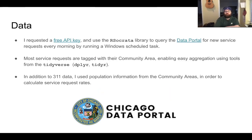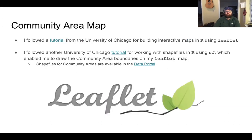In addition to 3-1-1 data, I used population information from the community areas in order to calculate service request rates. To make my community area map, I followed a tutorial from the University of Chicago for building interactive maps in R using Leaflet. I followed another University of Chicago tutorial for working with shapefiles in R using SF, which enabled me to draw the community area boundaries on my Leaflet map. Shapefiles for community areas are all available in the data portal.